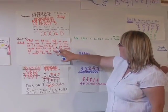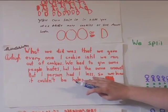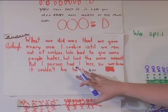What we did was we gave everyone one cookie until we ran out of cookies, and we had to give some people halves, but we had the same amount. But one person had one left, so we couldn't be whole.